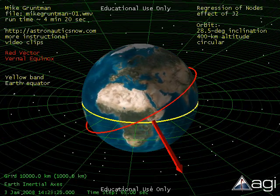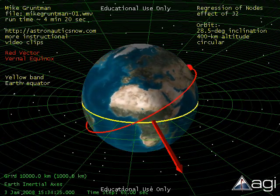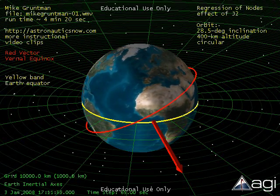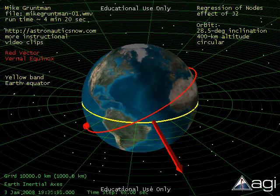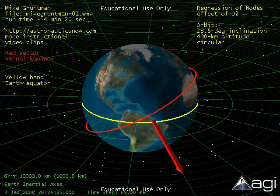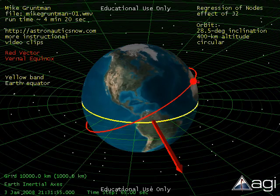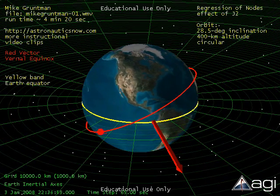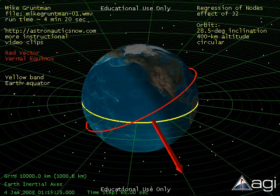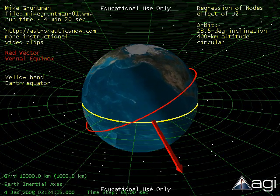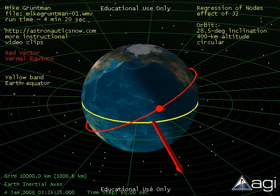If the Earth were perfectly symmetric, then the orientation of the orbital plane would have remained fixed in inertial space. Because of nonzero J2, the orbital plane changes its orientation while preserving inclination. It is said that the orbital plane precesses and rotation of the line of nodes is called regression of nodes.